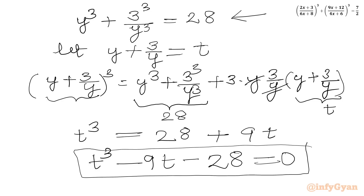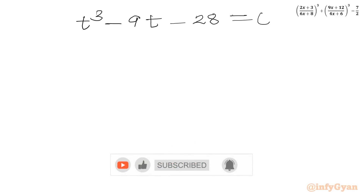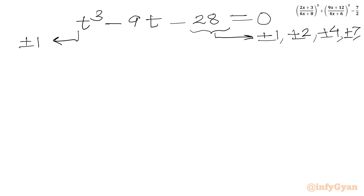We need to solve the cubic equation T³ − 9T − 28 = 0. Using the rational root theorem, the eligible factors of 28 are ±1, ±2, ±4, ±7, ±14, ±28. The leading coefficient is 1, so we test these values.